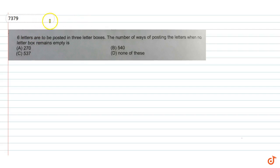Six letters are to be placed in three different letterboxes. The number of ways of posting the letters when no letterbox remains empty is C. So we have six letters and three letterboxes: letterbox one, letterbox two, and letterbox three.